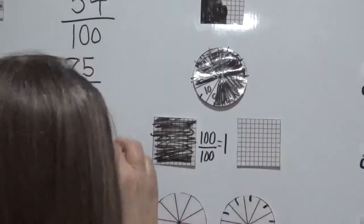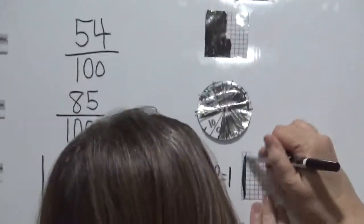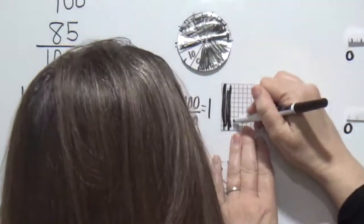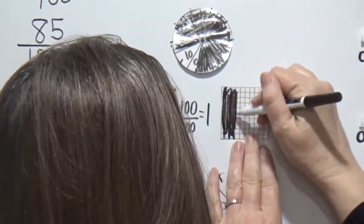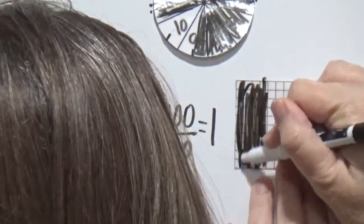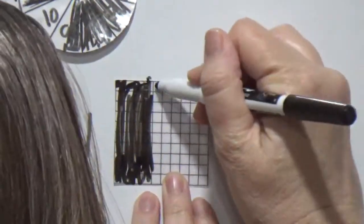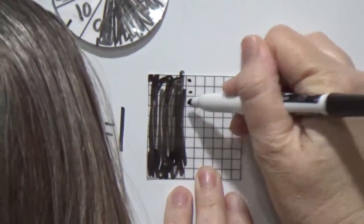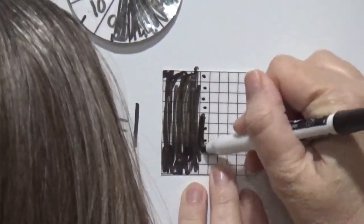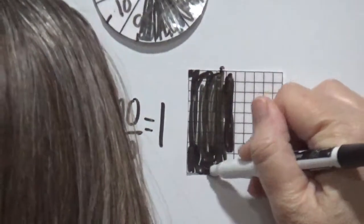For the picture model of one and forty-eight hundredths, the entire first grid is shaded in because it represents one whole. Then on the second grid, you shade in forty-eight squares — four full columns and eight additional squares — so all of that should be shaded in.